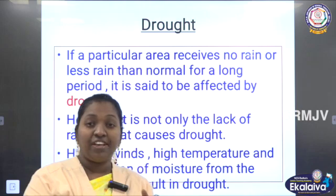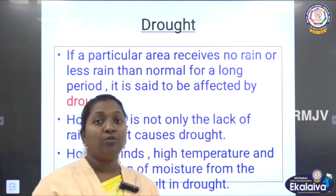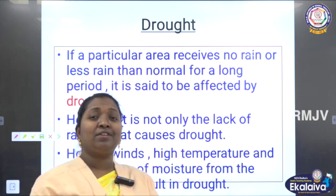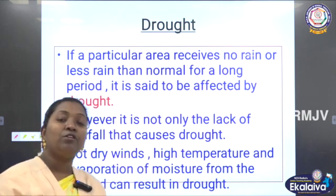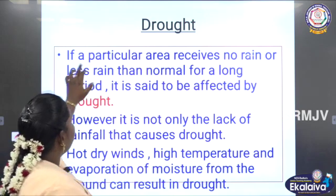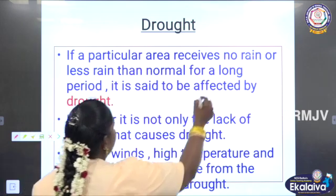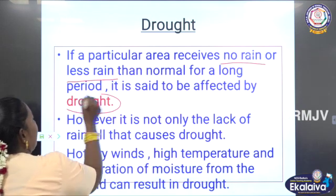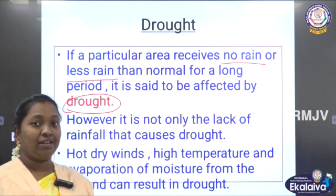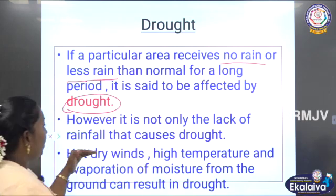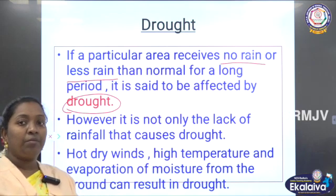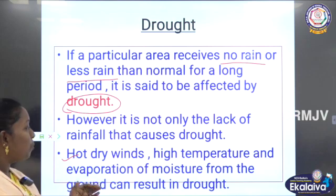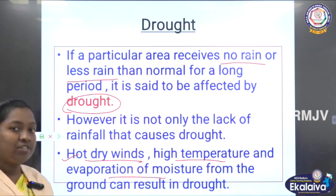So far we have seen natural disasters caused by rainwater or cyclones. The next topic is drought. Drought is quite opposite to the topics of cyclone and flood. Drought means no rain, no water. If a particular area receives no rain or less rain from the normal level for a long period, we can call that drought. However, it is not only the lack of rainfall — hot dry winds, high temperature and evaporation of moisture are also reasons for causing the drought natural disaster.